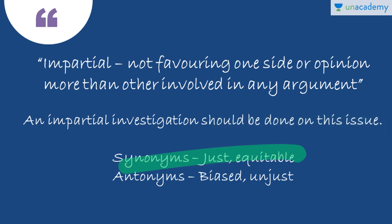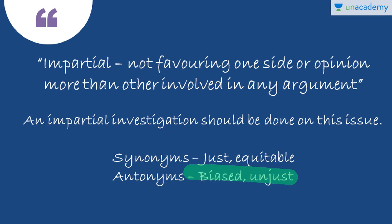Synonyms for impartial: the first one is just, which means when you behave according to what is morally right or fair — you are not biased and you act in a fair way. You can also say equitable, which similarly means you are not biased on one side and you do what is morally right and fair. Antonyms: the first is biased, when you are actually on one side and unfair towards something, unfairly prejudiced for or against someone because of personal issues or other factors. The second antonym is unjust.